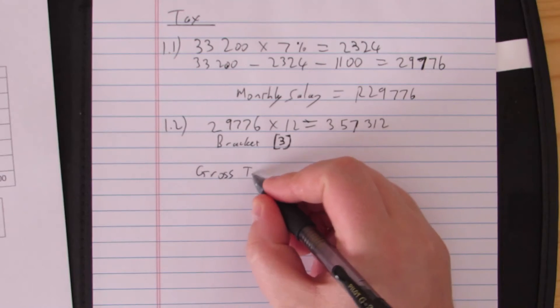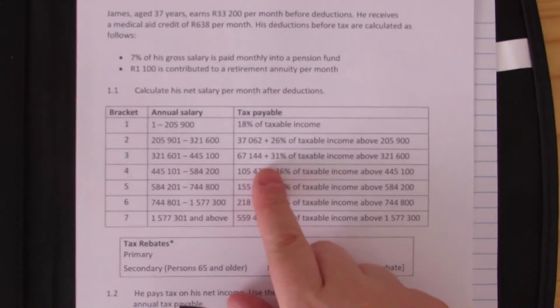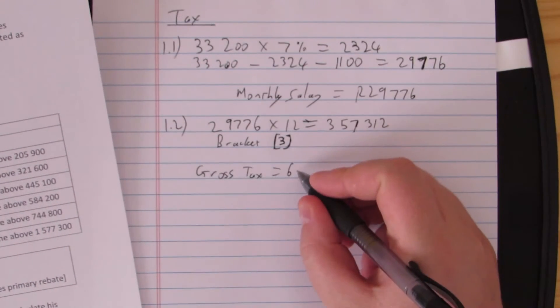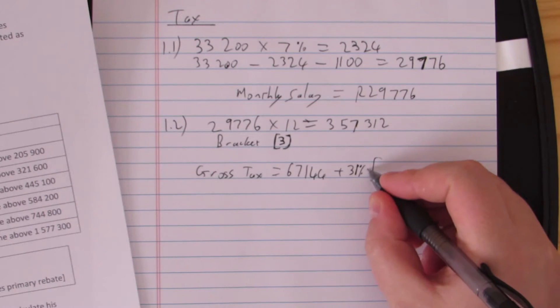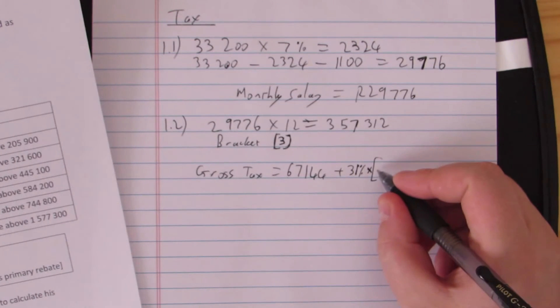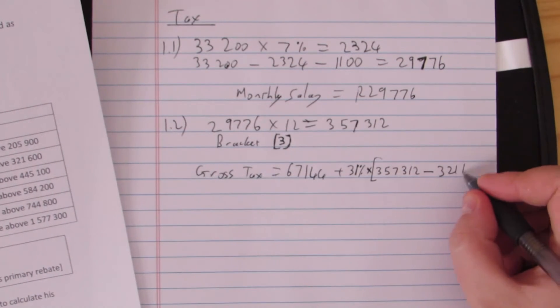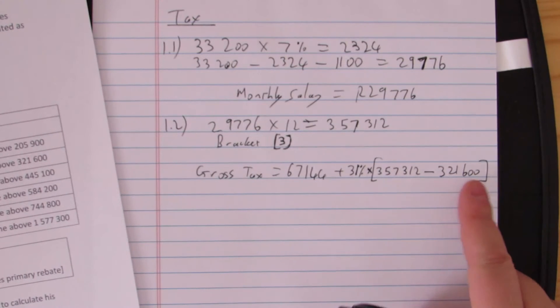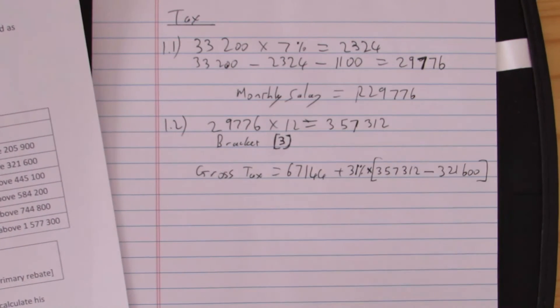I'm first going to work out our gross tax. The gross tax is equal to—now you need to use the formula. We're looking at bracket three, so we can copy out of the formula. If my formula tells me 67,144 plus 31% of the amount that he earns over 321,000, so we're going to go 357,312 minus 321,600. A fixed amount plus the variable amount or the sliding amount.